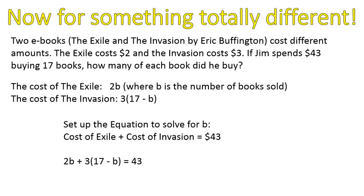This is the most challenging part of solving this type of word problem — recognizing that even though there are two variables, you have to express them with just one variable in order to solve the equation. You could use e for exile and i for invasion, but to solve you must reduce to one variable. That's what makes this equation solvable, and it's the part that takes the most time to wrap your head around.